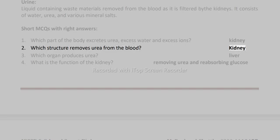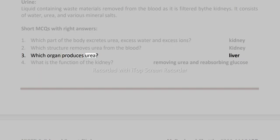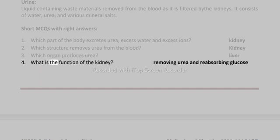3. Which organ produces urea? Liver. 4. What is the function of the kidney? Removing urea and reabsorbing glucose.